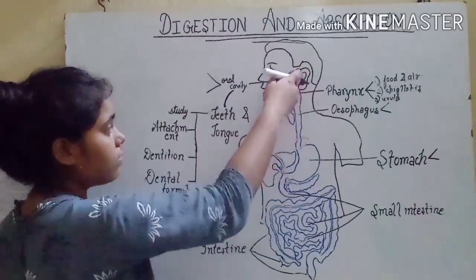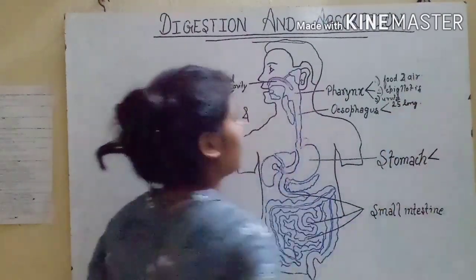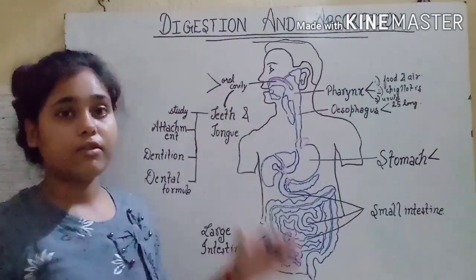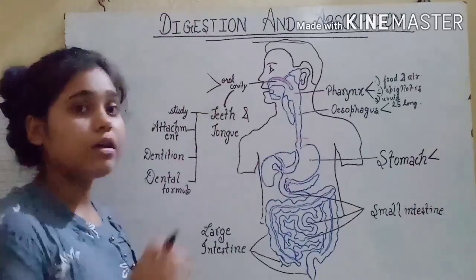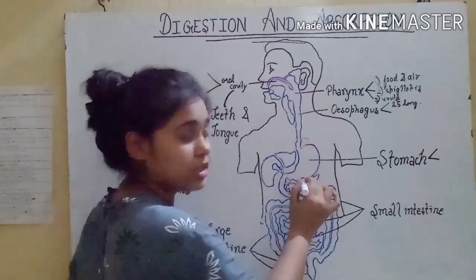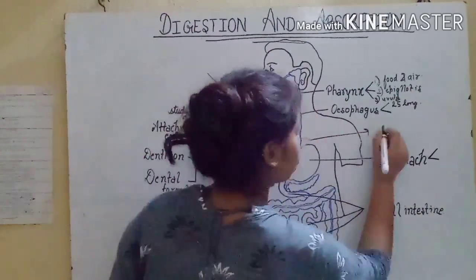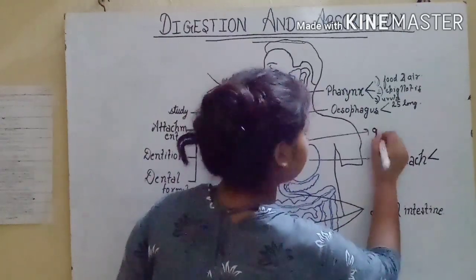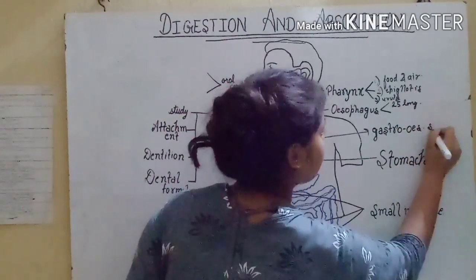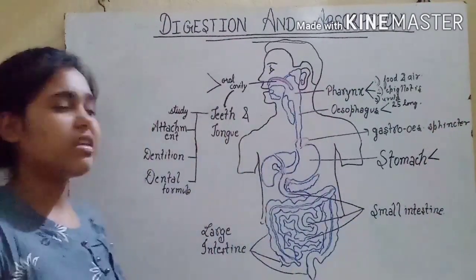After the food enters the pharynx, it enters the esophagus. The esophagus is a 25 cm long tubular structure. The passage of food in the esophagus is by peristaltic movement. The food from the esophagus enters into the stomach with the help of the gastro-esophageal sphincter, which is a muscular ring.